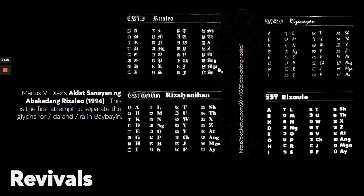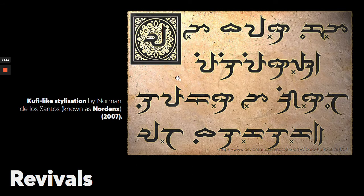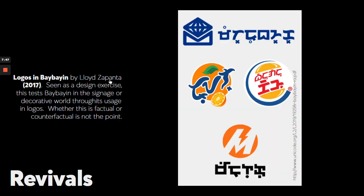In 1994, the script entered the photo typesetting world, which was also the first attempt to separate Da and Ra. There are some other style explorations, like what Norman de los Santos, also known as Nordenx, did. There's also a counterfactual design exercise whereby Baybayin was used instead of Latin script — this makes for a rather fun and visionary design exercise if you check the opinions of other designers.